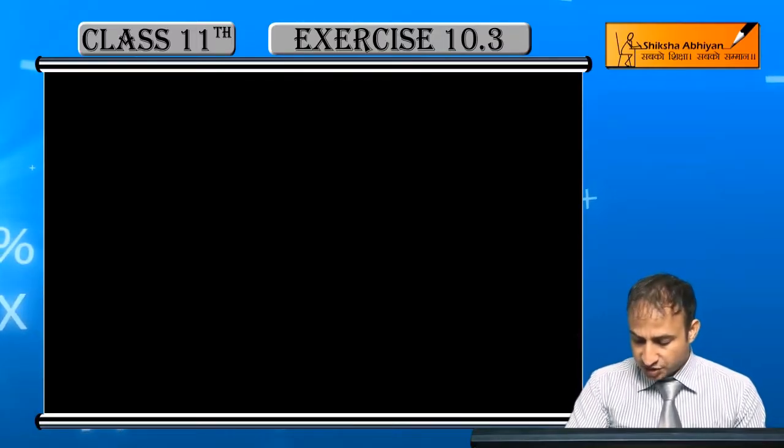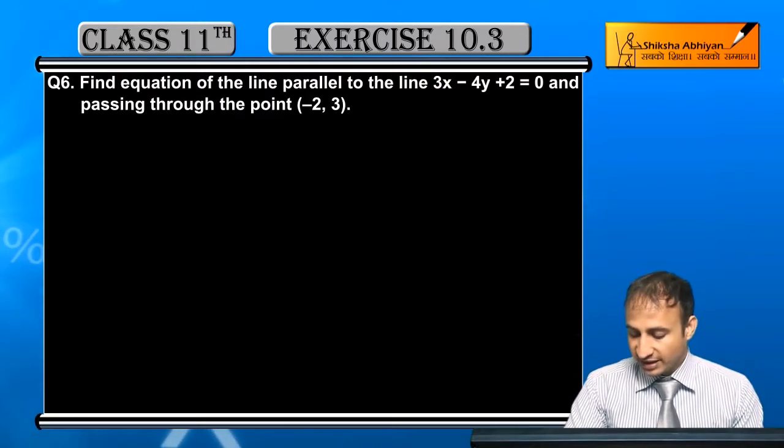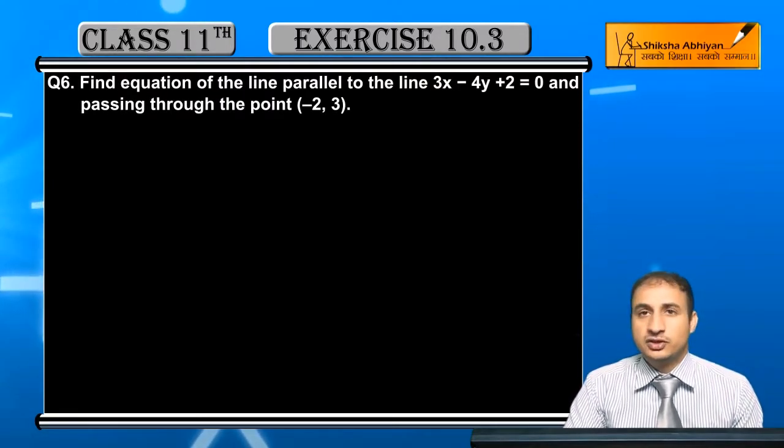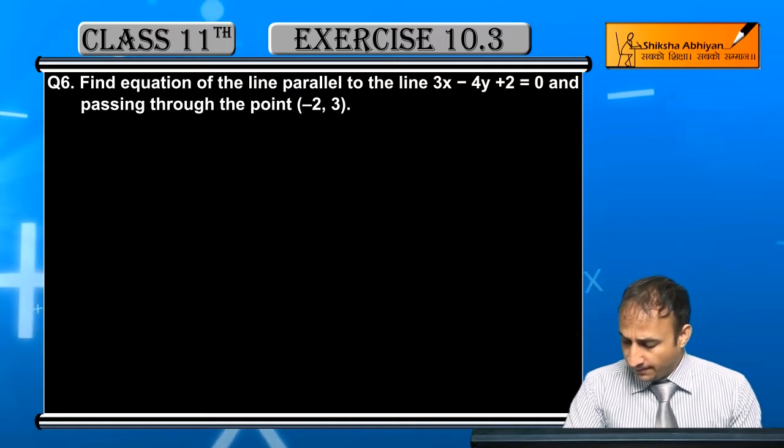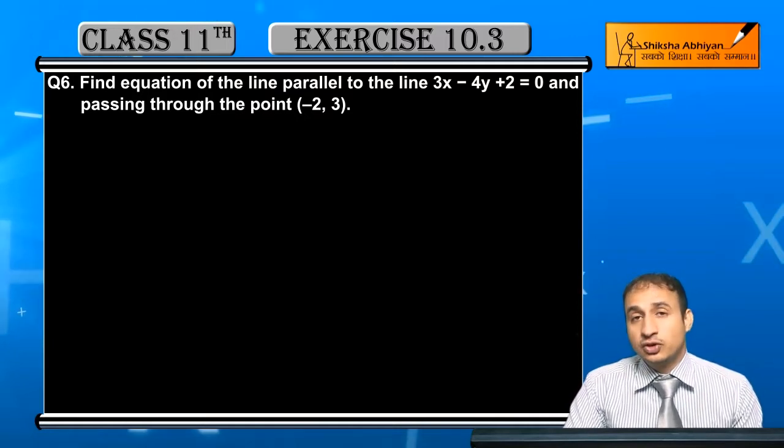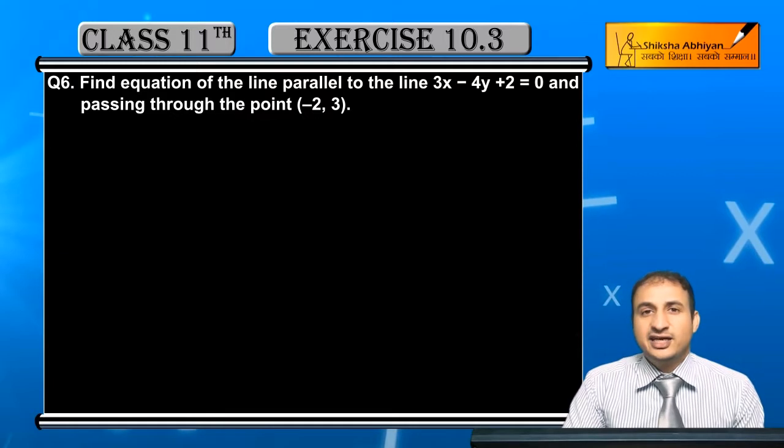Now question 6. Find the equation of a line parallel to the line 3x minus 4y plus 2 equals 0 and passing through the point (-2, 3).